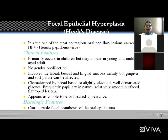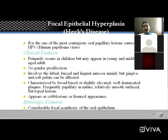The next developmental anomaly is focal epithelial hyperplasia. Focal means localized; diffuse means widespread. Focal epithelial hyperplasia is purely epithelial in origin. Hyperplasia means increase in the number of cells; hypertrophy means increase in the size of the cell.